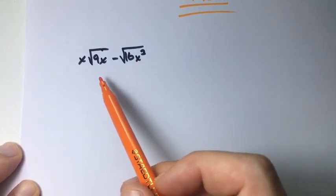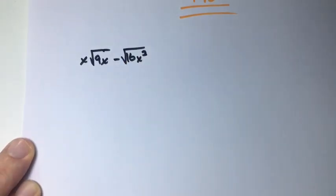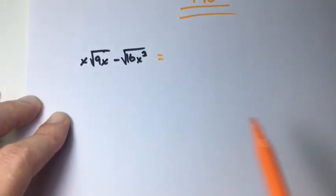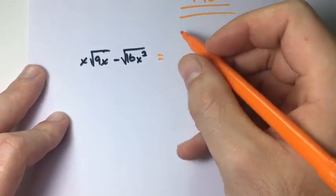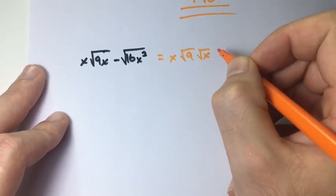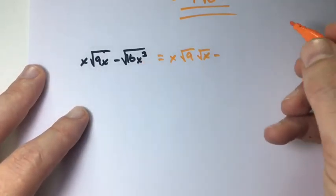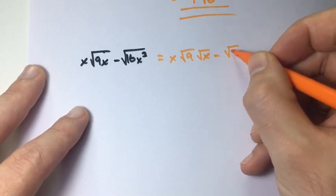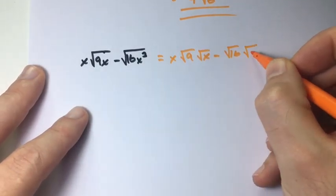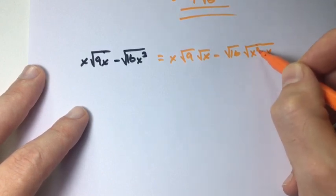In this next example we have x times the square root of 9x minus the square root of 16x cubed. We're going to use the product rule and split up the radicands. The first one becomes x times the square root of 9 times the square root of x, minus — 16 is a perfect square so we leave the square root of 16. Now x cubed isn't a perfect square, but we can split it into x squared and x, and x squared is a perfect square.